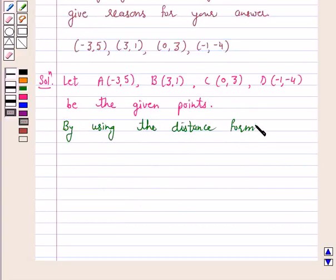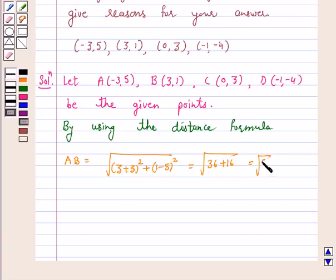We have distance AB is equal to square root of (3+3)² + (1-5)². So, this is equal to 36 + 16 which is equal to square root of 52, which equals 2√13.